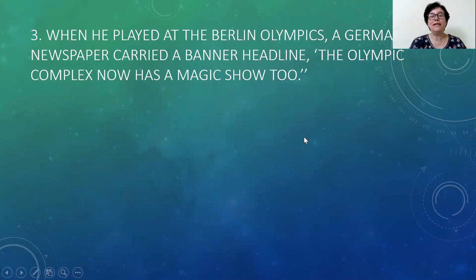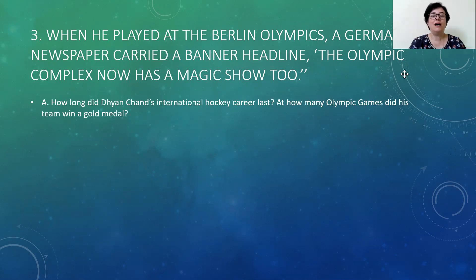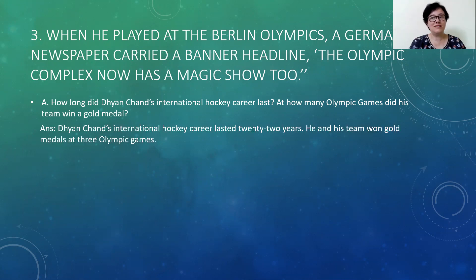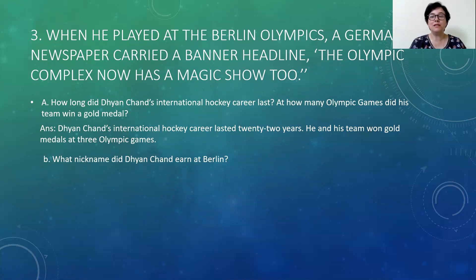The third passage: 'When he played at the Berlin Olympics, a German newspaper carried a banner headline: The Olympic complex now has a magic show too.' Question A: How long did Dianjanth's international hockey career last, and at how many Olympic games did his team win a gold medal? Dianjanth's international hockey career lasted 22 years and he and his team won gold medals at three Olympic games. Question B: What nickname did Dianjanth earn at Berlin? Dianjanth earned the nickname Hockey Wizard at Berlin.